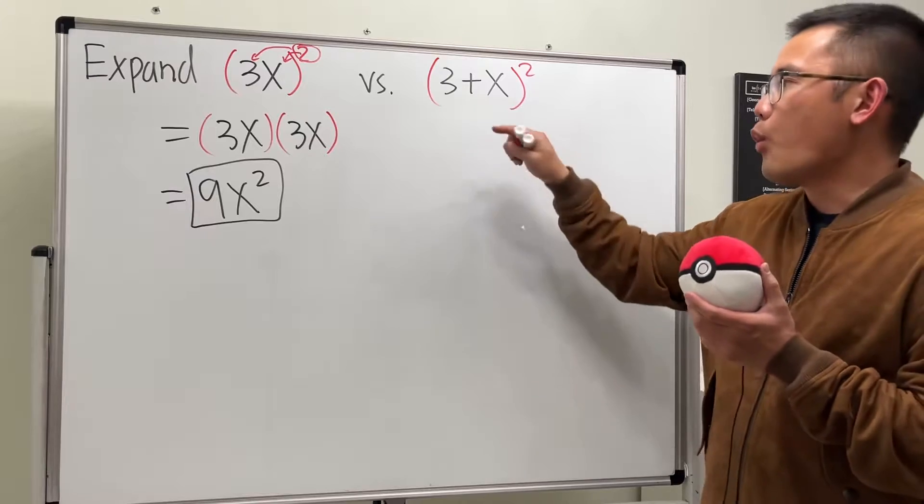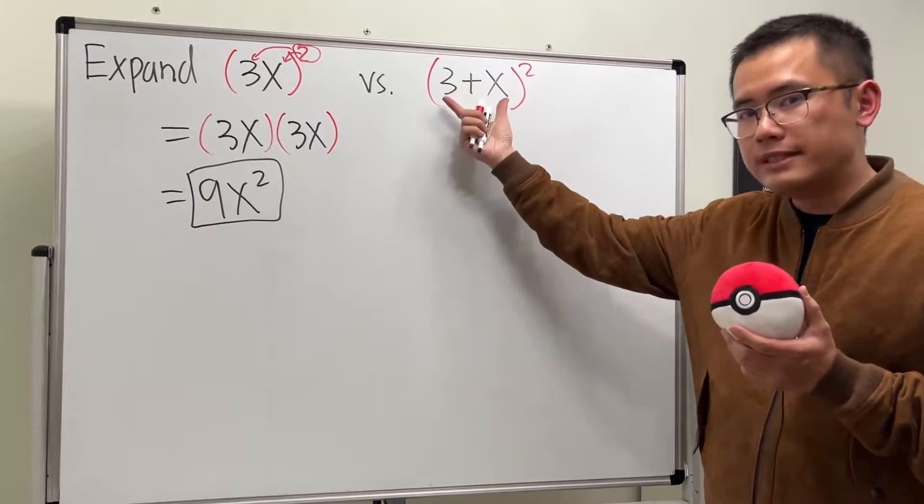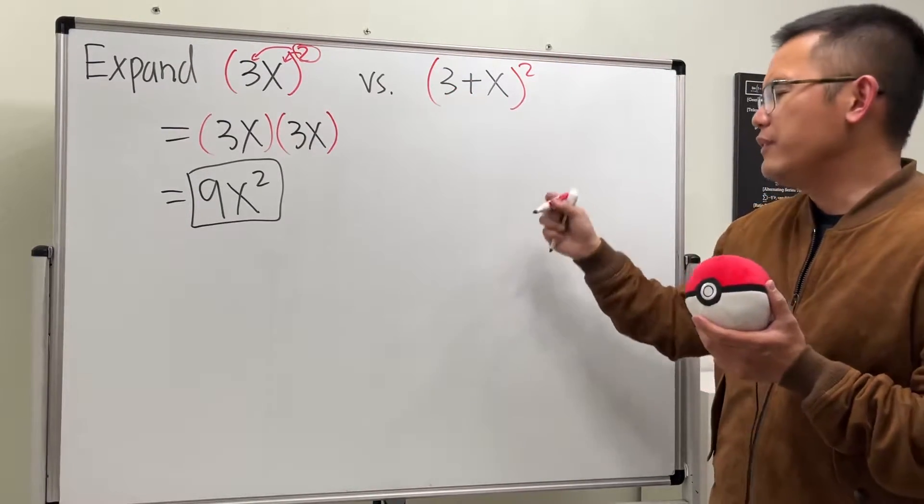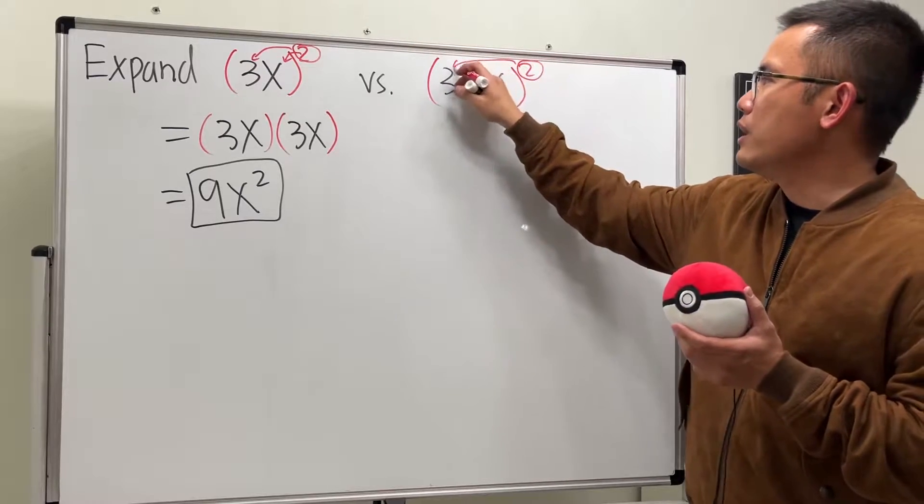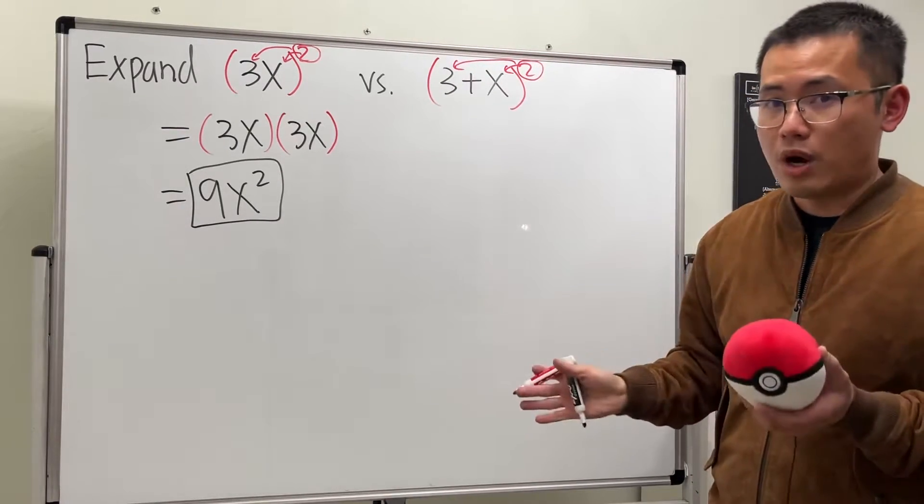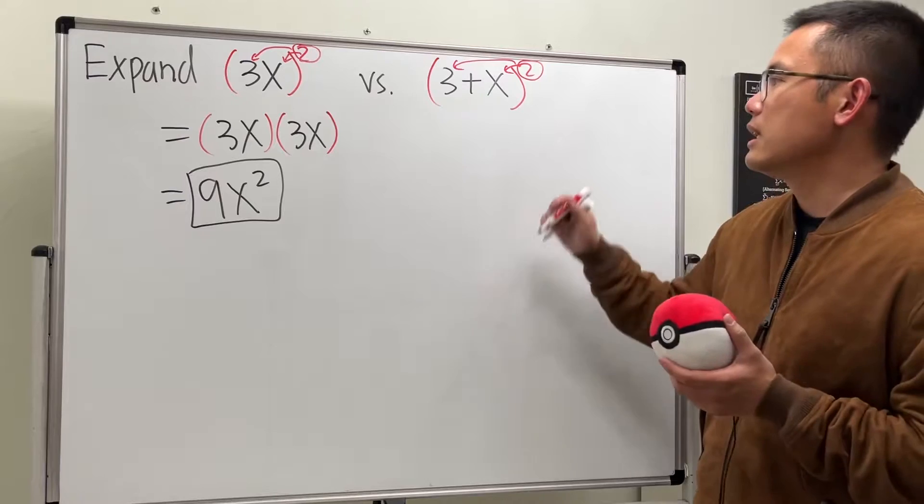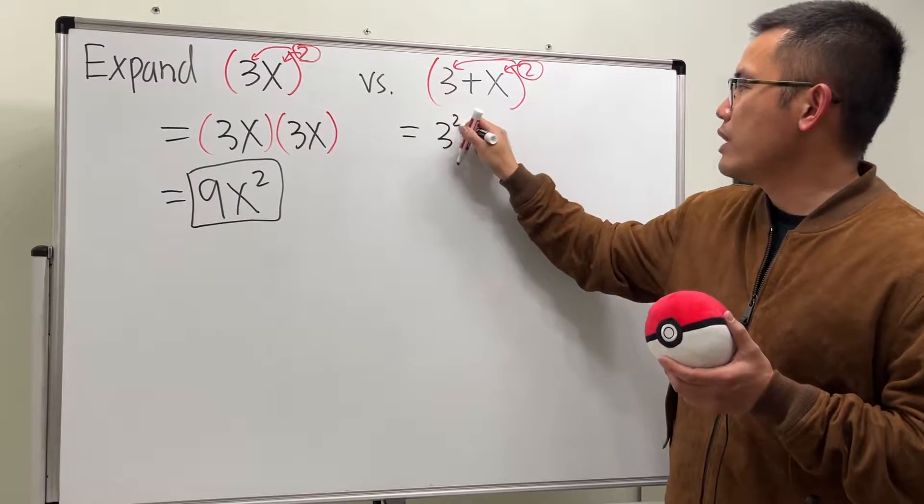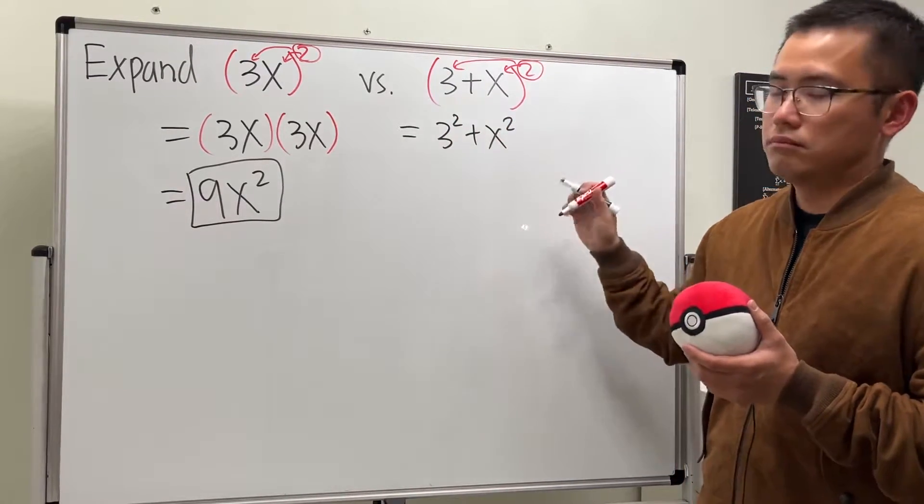However, if you try to do that for the second one where we have 3 plus x in the parentheses like this and then square, if you really want to just put this to here to here, then this right here is wrong. The very common mistake is people will just say this is equal to 3² + x², but as I said, this right here is not correct.